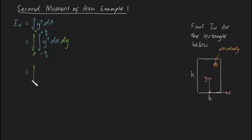Remember we treat y as constant with double integrals. This becomes the integral from 0 to h of y² times x with limits from -b/2 to b/2, and we still have dy.